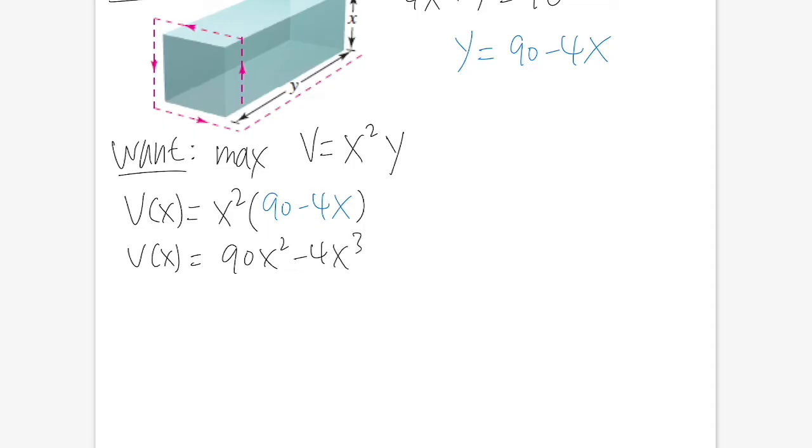Now let's go ahead and take the derivative, which will get 180x - 12x². Then we set this to be equal to zero, and right here it really depends on how you want to solve it. Perhaps I will just do factoring.